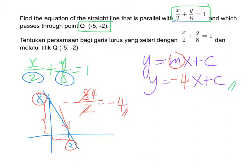If we substitute the x-coordinate and y-coordinate into the equation, we can find out c. Now y-coordinate is negative 2, and x-coordinate is negative 5.